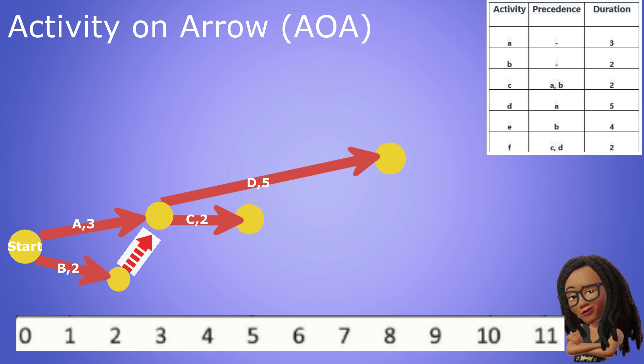Activity E only has B as a predecessor. So we draw an arrow from B's terminating node for a length of four days which means activity E terminates at day six on the timeline.